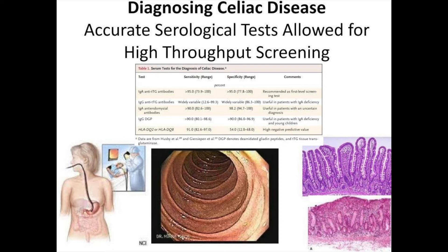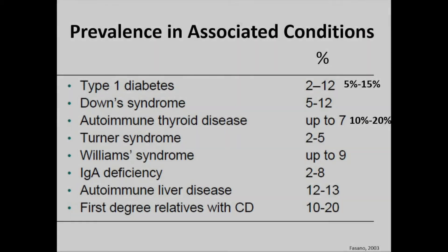Now we can do blood tests in the office to identify patients at risk for celiac disease. This led researchers like Dr. Fasano of our celiac center to conduct large population studies, which told us that celiac disease affects about 1 in 100 patients in the United States, and that certain conditions carry higher risk — including other autoimmune diseases like type 1 diabetes, autoimmune thyroid disease, and autoimmune liver disease; genetic syndromes like Down syndrome and Williams syndrome; and first-degree family members of celiac patients, with frequencies between 15% and up to 26% depending on genetics.